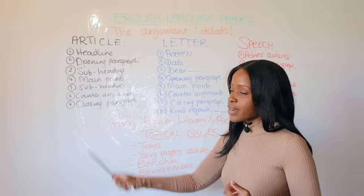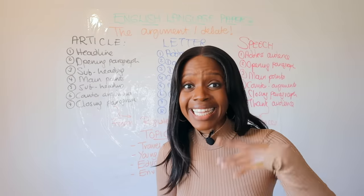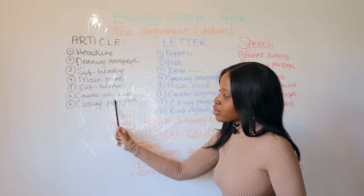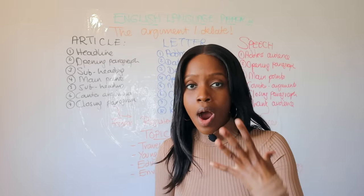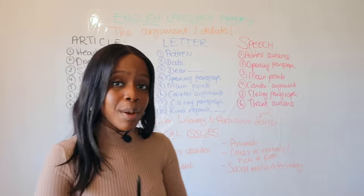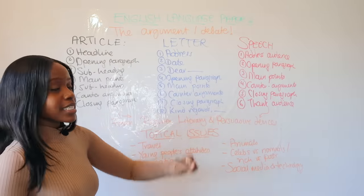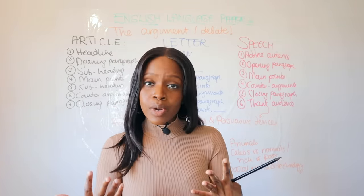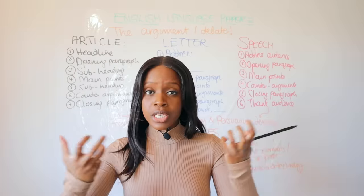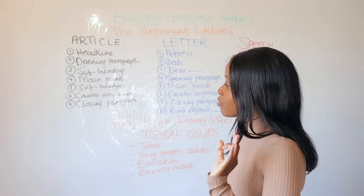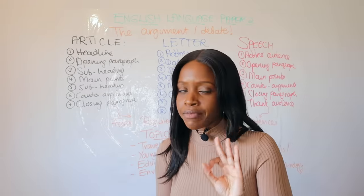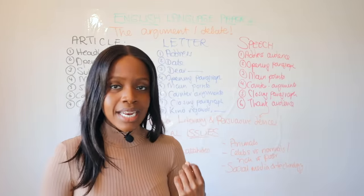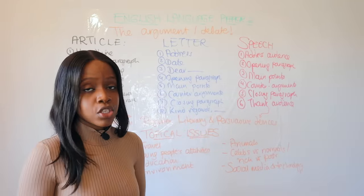Step five is another subheading to break up the text — this one should hint at the counter-arguments, because you need to balance your discussion. Step six is where you include your counter-arguments, showing why people would disagree with your perspective. Remember, a debate is not just one-sided; you need to show both your perspective and why others disagree. Then finish off with your closing paragraph, and please never end your article with 'in conclusion' — it's not an essay, it's supposed to be an entertaining article.